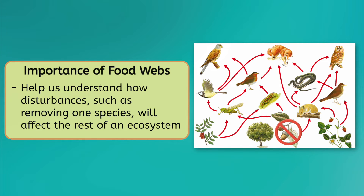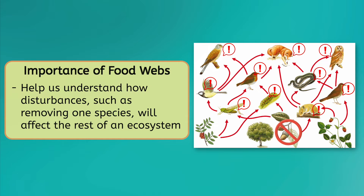For example, what do you think will happen if we remove this one producer from this food web? Pause the video and write your thoughts in your guided notes. Removing this producer affects all the primary consumers that rely on it, as well as all the secondary consumers that eat them, and the tertiary consumers that eat the secondary consumers. That's all from removing just one producer.